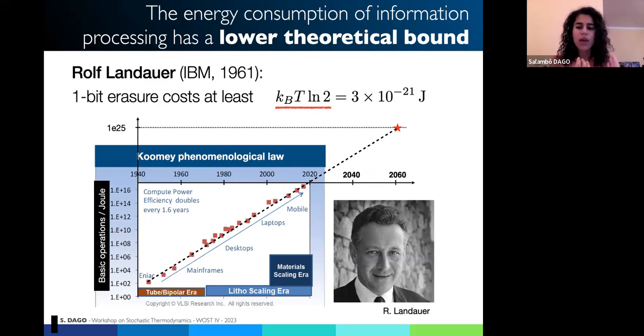Nowadays, in 2020, we were able to perform at best one basic operation for 10 to the power minus 15 joules. You could assume that it will still keep rising this way. But at one point, we will reach a fundamental lower theoretical bound that was stated by Ralph Landauer working for IBM at the time in 1961. He claimed that one bit erasure or similarly, one bit writing will cost you at least KB T log of two, where KB is the Boltzmann constant, T the temperature of the device you're using to proceed, and log of two is just the logarithm of two. This can seem very small, three times 10 to the power minus 21 joule at room temperature. But if we keep going this way, within 40 years, we will reach this fundamental bound.